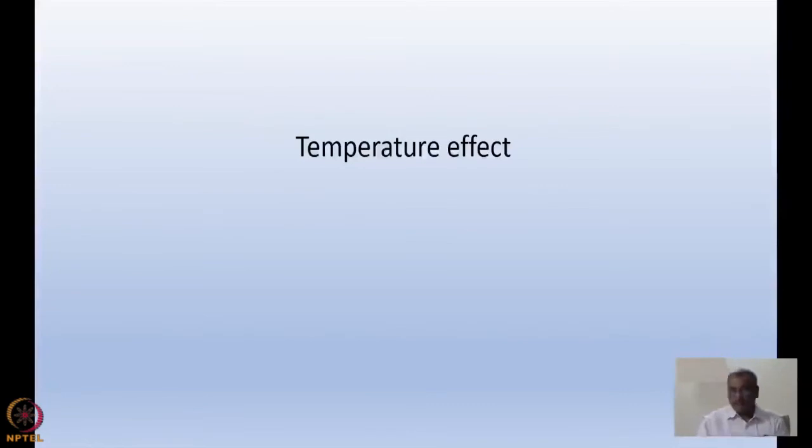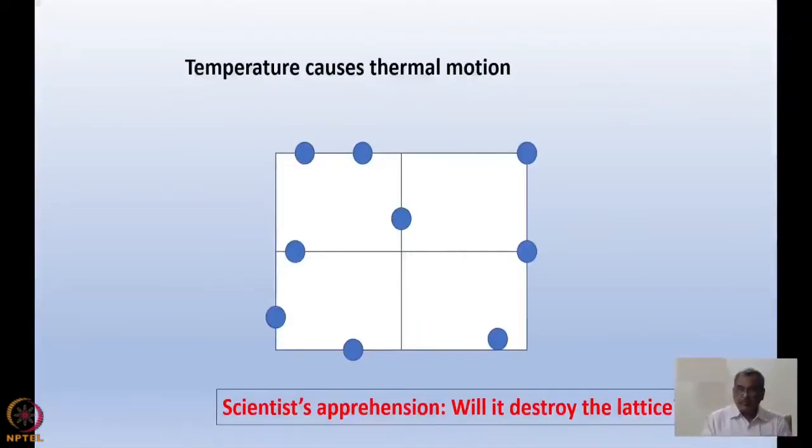What does temperature do? Temperature causes thermal motion. Scientists were apprehensive about the fact that when we have a finite temperature, even if we have an underlying crystal lattice, they may look somewhat like what I am showing here in this picture. Because these are the mean positions in a square lattice, indicated from the grid.